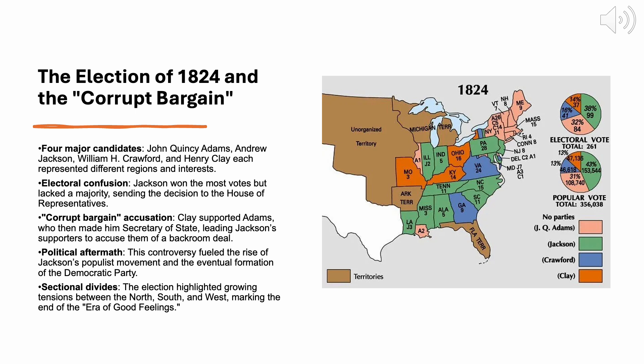As Speaker of the House, Henry Clay wielded considerable influence over the outcome. Clay, despite finishing fourth and being eliminated from contention, threw his support behind John Quincy Adams. When Adams won and subsequently appointed Clay as his Secretary of State, Jackson's supporters cried foul, accusing the two of making a corrupt bargain. This accusation of backroom deal-making tarnished Adams' presidency and fueled the rise of Jackson's populist movement, which would ultimately lead to the formation of the modern Democratic Party.